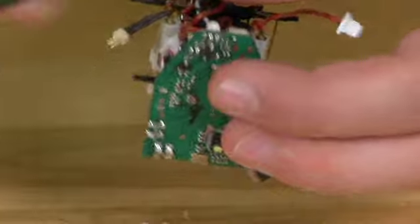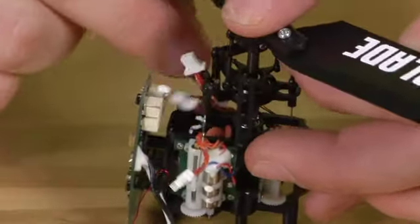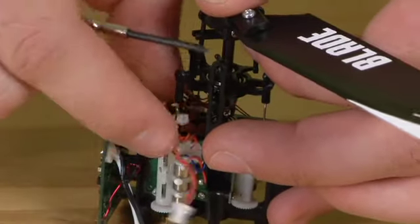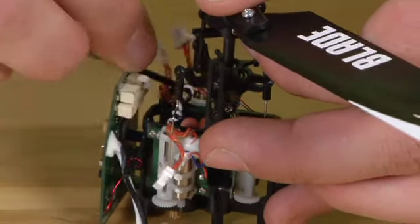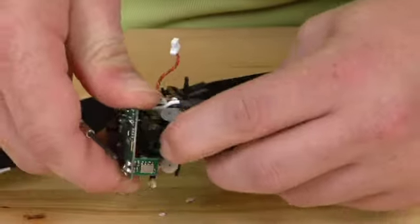Once you have all of the connections undone, pull all the wires out of the way of the main motor. Push the motor up and then pull it out the top.